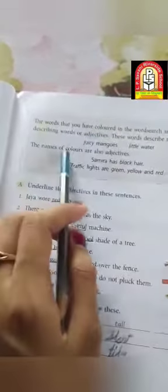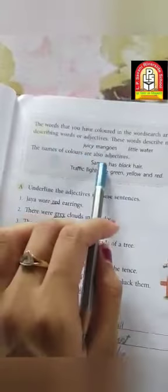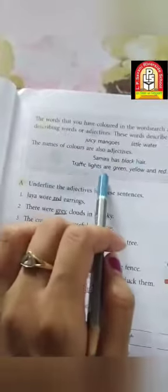The names of colors are also adjectives. Samira has black hair. Traffic lights are green, yellow and red. So these colors are also known as adjectives.